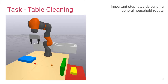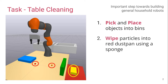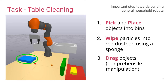So what do we need in order to clean a table? Firstly, we'd like to pick and place objects into given bins. Secondly, we want to be able to wipe particles across the table into a dustpan using a given sponge. And finally, we want to be able to drag objects across the table, an example of non-prehensile manipulation. All this represents a small but important step towards building a general household robot.